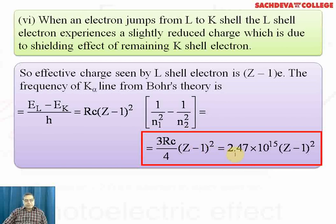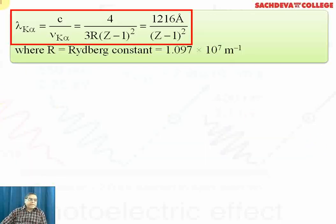So the relation becomes ν = 2.47×10¹⁵(Z-1)². Lambda K alpha line will be c/ν_Kα = 4/[3R(Z-1)²], and if we further reduce it, it will become 1216Å/(Z-1)².